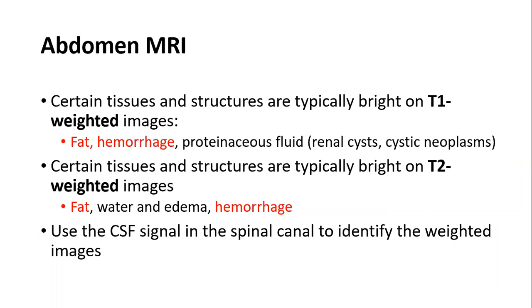On abdominal MRI, certain tissues are bright on T1-weighted images — fat and hemorrhage — while others are bright on T2-weighted images, including fat, water, edema, and hemorrhage. Fat and hemorrhage are bright on both T1 and T2. A key feature to identify the sequence: look at the CSF posterior to the vertebra — if it is low intensity, it is T1-weighted; if high intensity, it is T2-weighted.